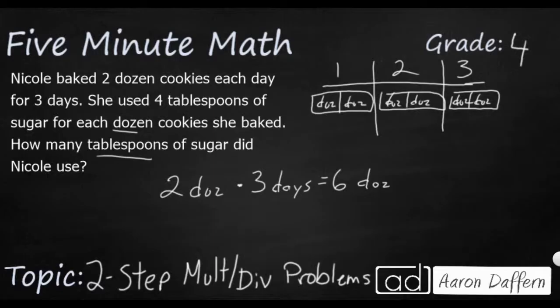Now, she uses four tablespoons of sugar for each dozen. So underneath each of these dozen, we've got four. And then a tablespoon is TBSP. I'm just going to write four underneath each of these. And each of those will have TBSP.